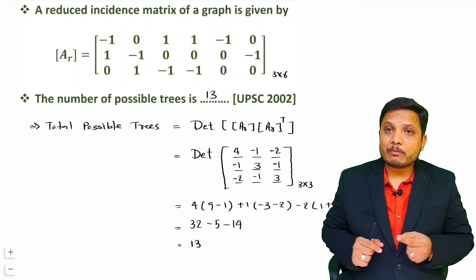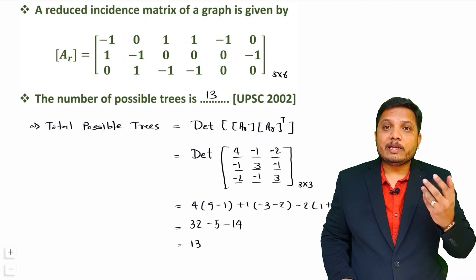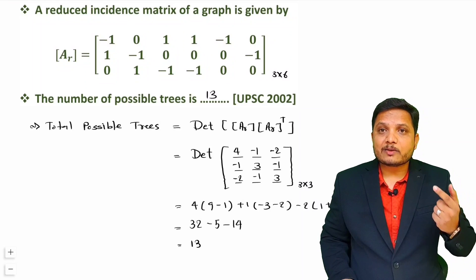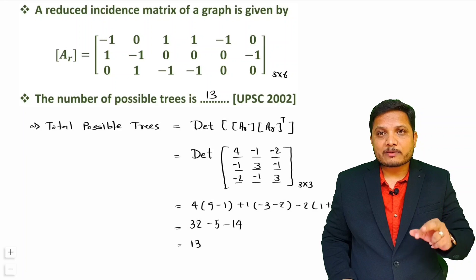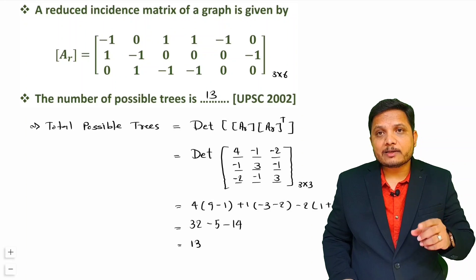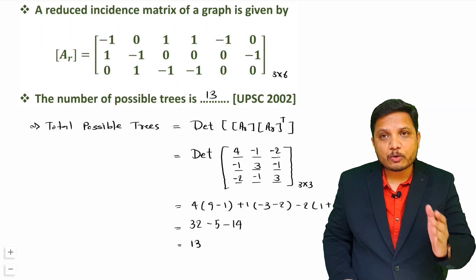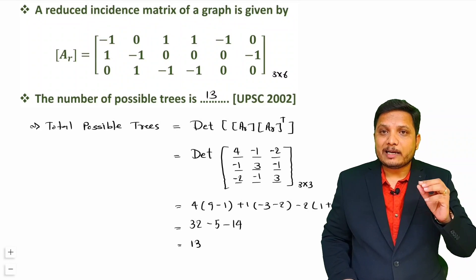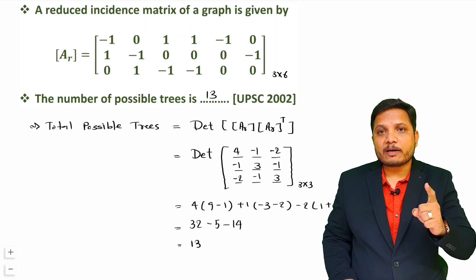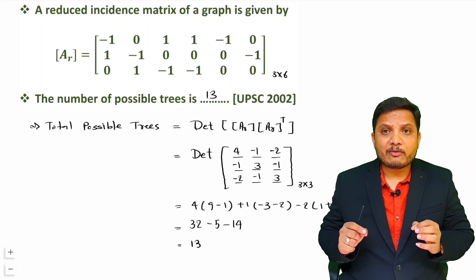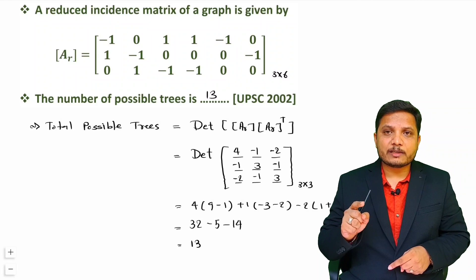To summarize: based on total branches and nodes, voltage equations equal n minus 1, and current equations equal total branches minus total nodes plus 1. That is the essential key point of this video. If you have any query, place it in the comment box — I will be happy to help. Thank you so much for watching.